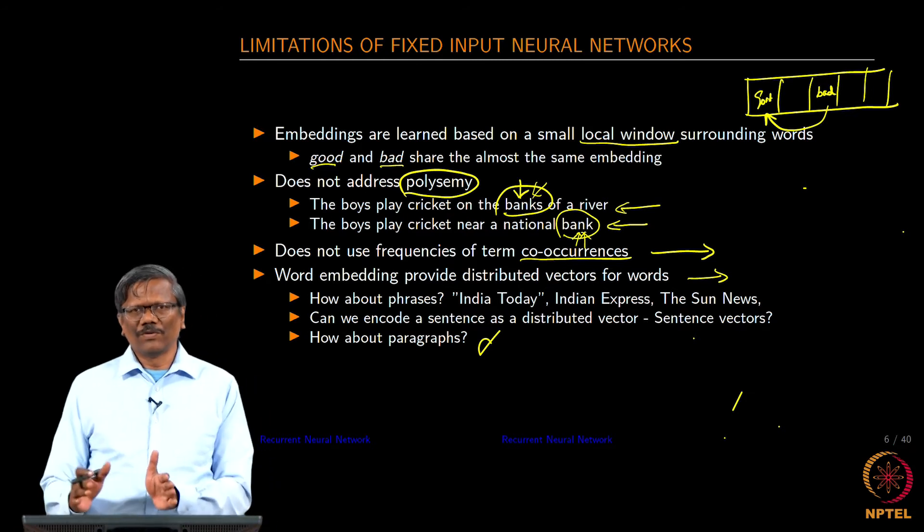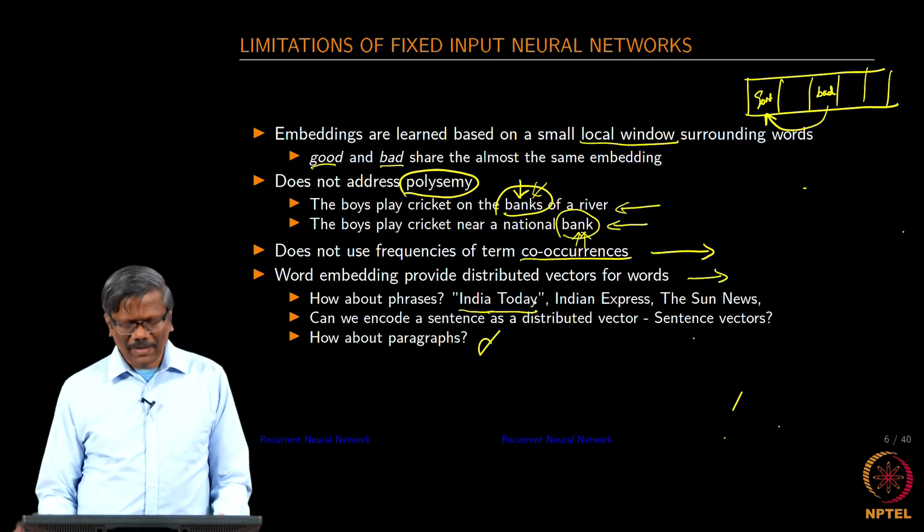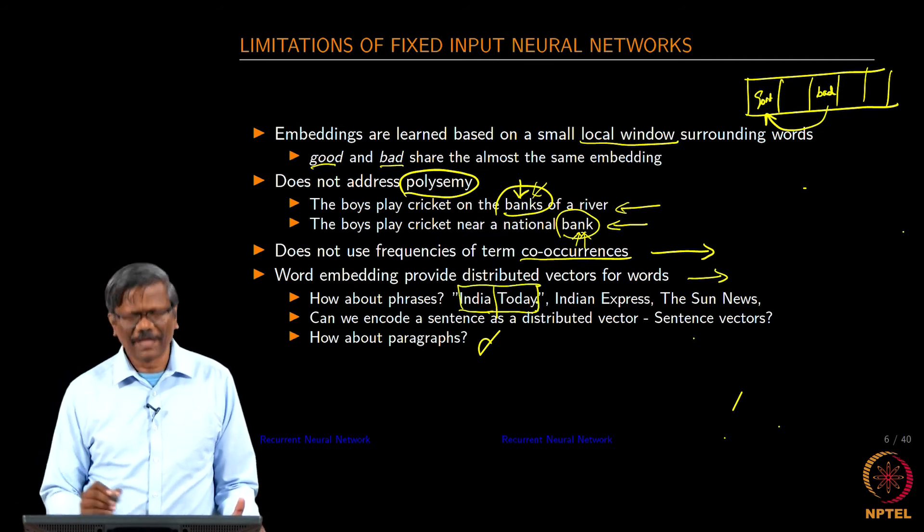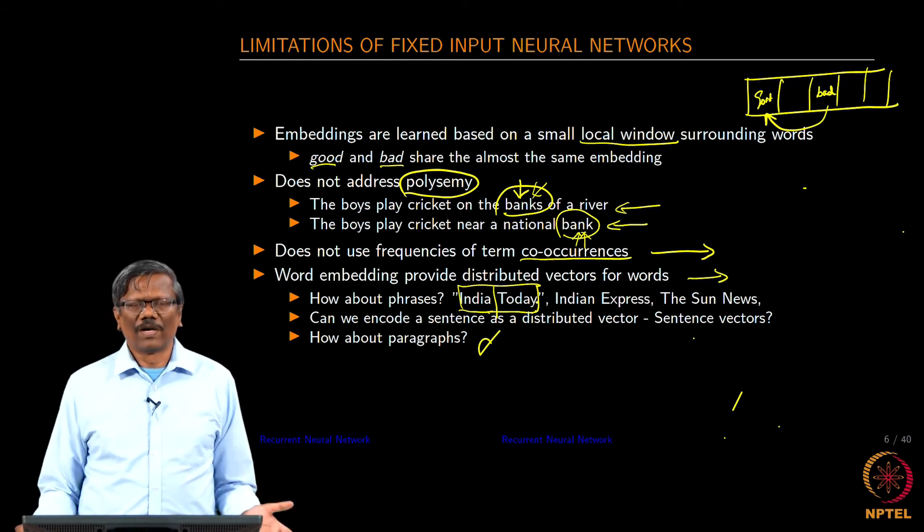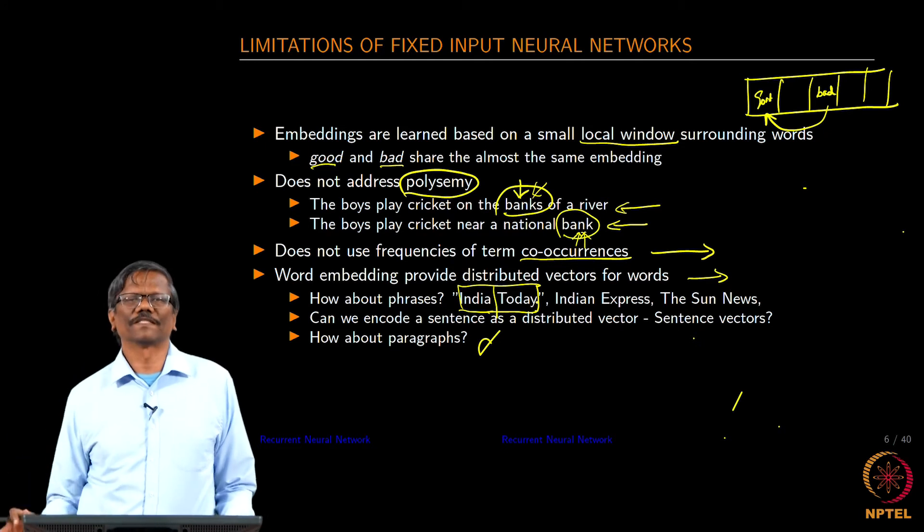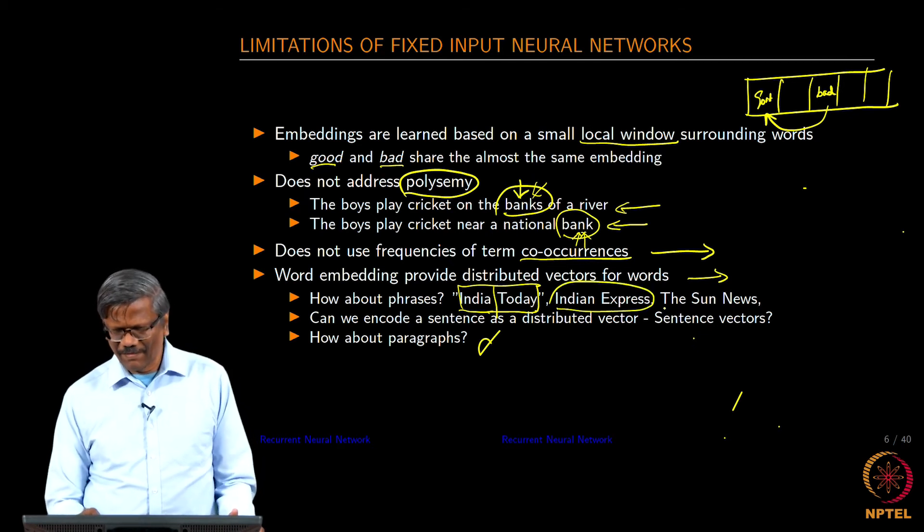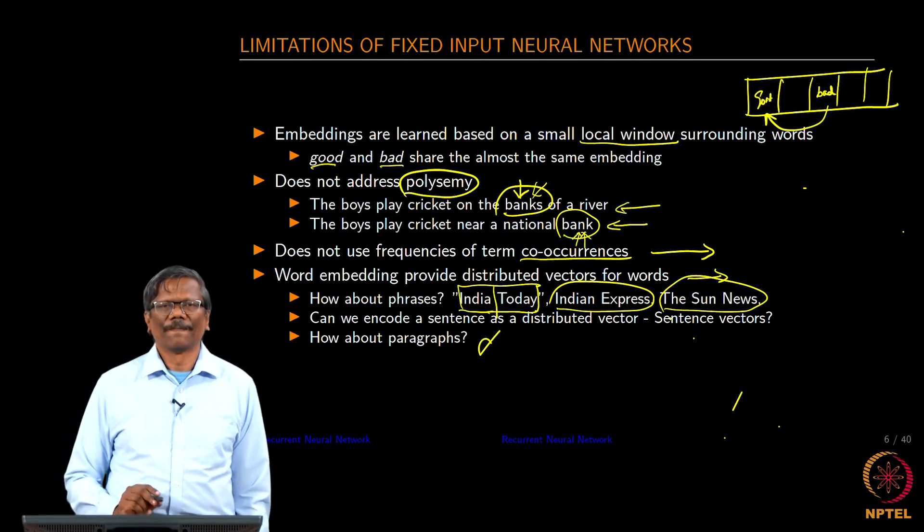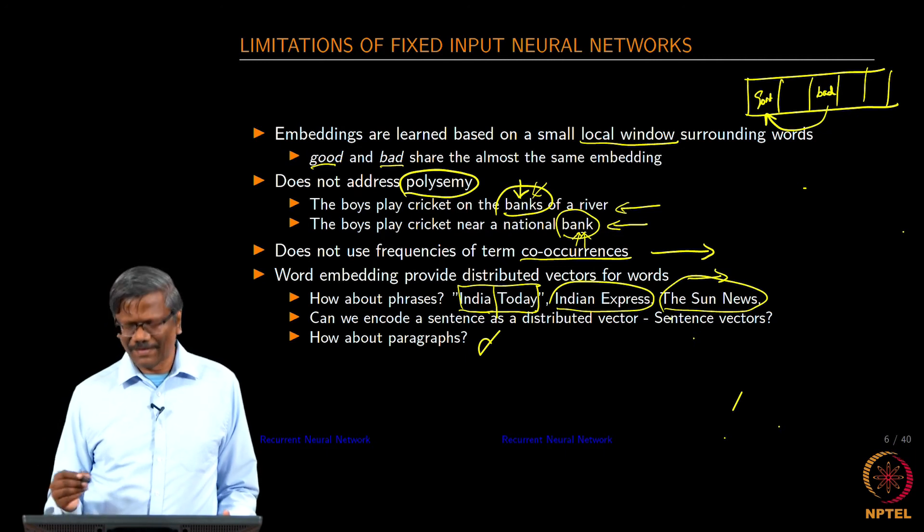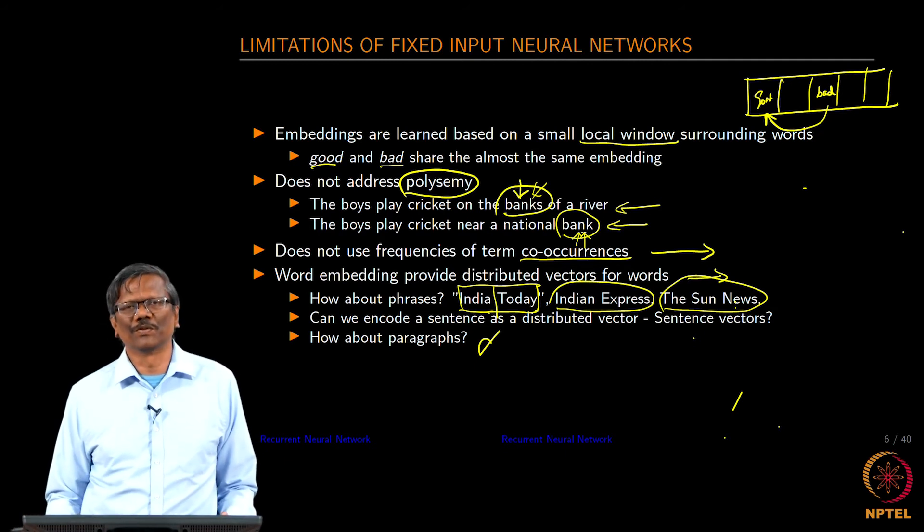Are we able to also use the same thing for phrases? The phrases such as India Today is a magazine, but these two are two different words, but they are joined here. This phrase we should be able to understand. How can we do that? One way to do it is take all those words where you see India Today appearing, make it as one word in the entire corpus and then use it as one word and then train it. That is one way of doing it. Can we learn these phrases? These are all important things as part of the natural language understanding. We should be able to really understand what are phrases and how they occur and what kind of words occur together and then completely have a different meaning.